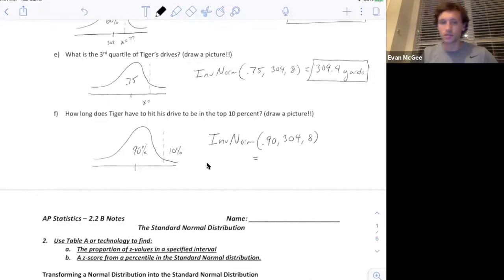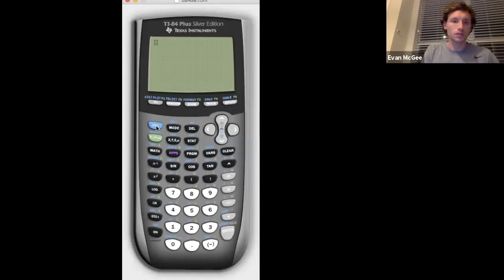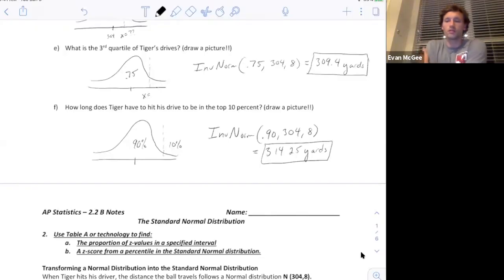If we type this in our calculator, we're just going to hit second, distribution, inverse norm 0.9, the mean is 304, standard deviation is 8. So a distance of 314.25 is the 90th percentile of Tiger Woods' drives. So 314.25 yards.